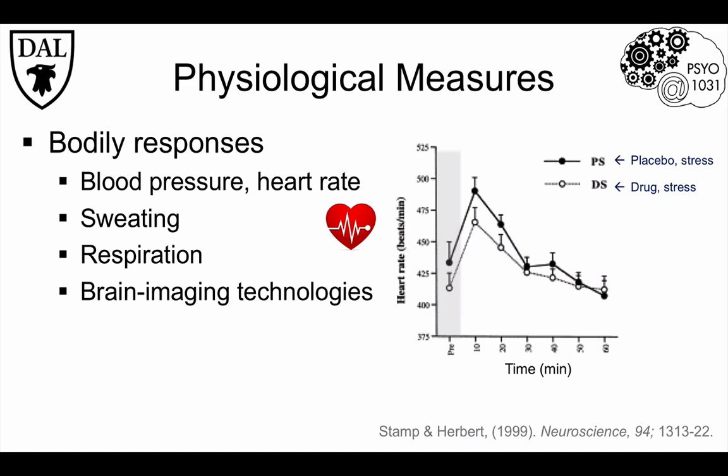After this, the rats were placed in restraining tubes used for giving injections in veterinary practice. Although this is not painful or harmful, rats do not appear to like it, so it's used as an experimental stressor. Ten minutes into this stressor, heart rate increases and gradually declines over the next 20–30 minutes, and there was little effect of the drug on this measure.